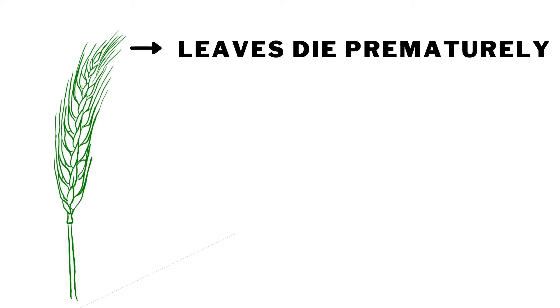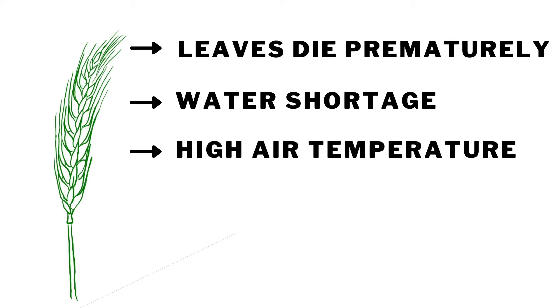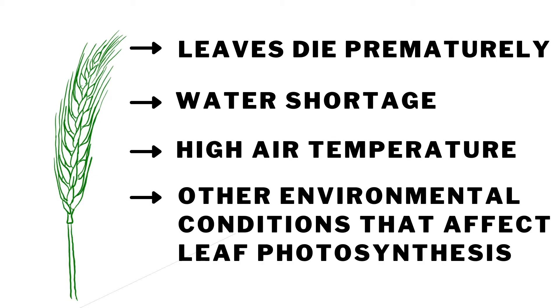The awn can make a large contribution to plant energy in situations where the leaves of the plant begin to die prematurely, there's a water shortage, high air temperature, or other environmental conditions that affect leaf photosynthesis.